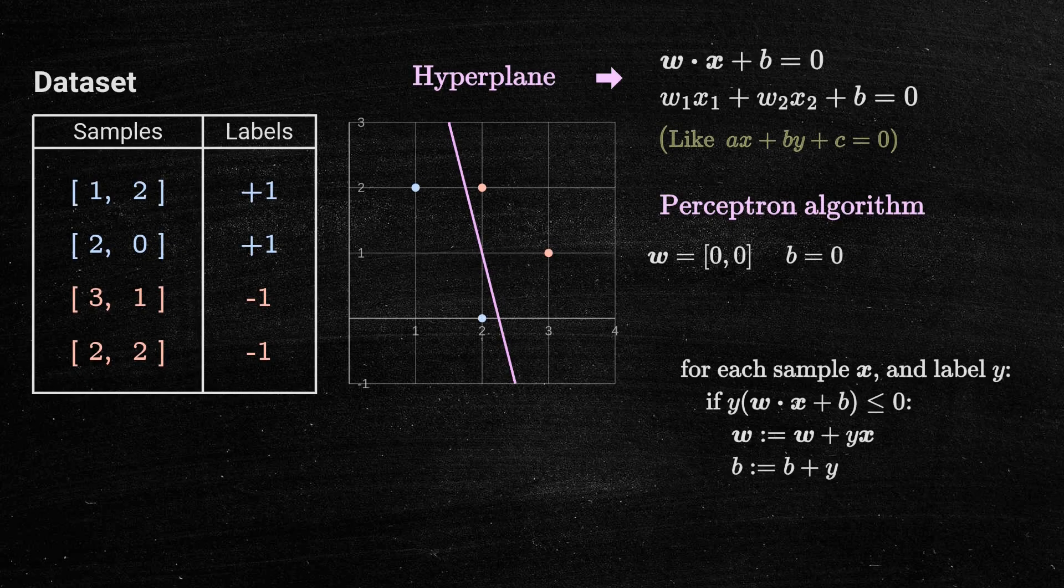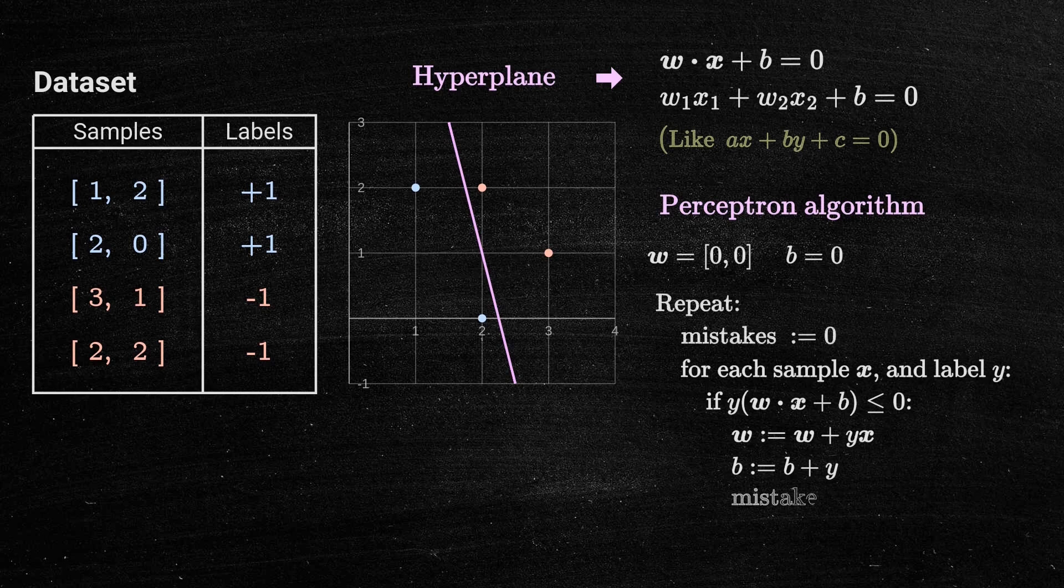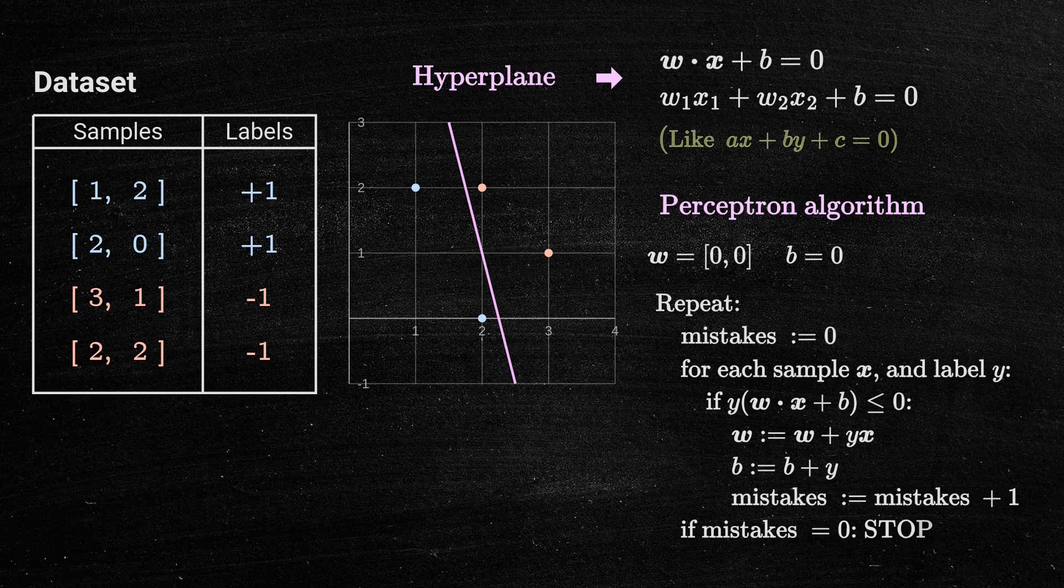We keep going through the whole data set multiple times, checking each sample and fixing the hyperplane when needed. We stop when everything looks good all the way through without any changes for each sample.